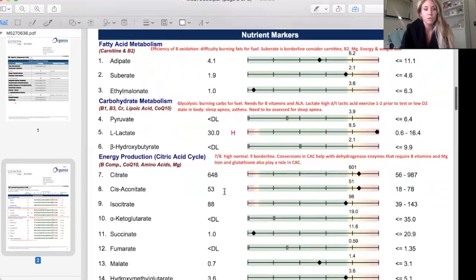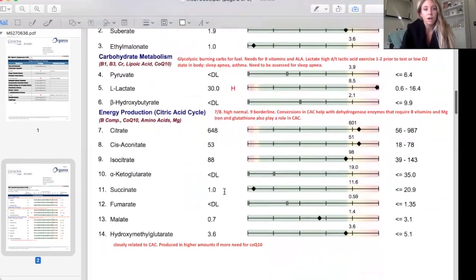Looking at energy production through the citric acid cycle, seven, eight are high here, nine is high normal borderline. What we're looking at is we want to support the citric acid cycle using B vitamins and magnesium and glutathione and iron. So we're thinking about things like a B vitamin, coenzyme Q10 which is an antioxidant, as well as amino acids to run the citric acid cycle. Instead of supplementing with amino acids, we can make sure to include enough proteins in the diet and ensure that protein is being digested by eating in a relaxed state or considering some digestive enzymes.